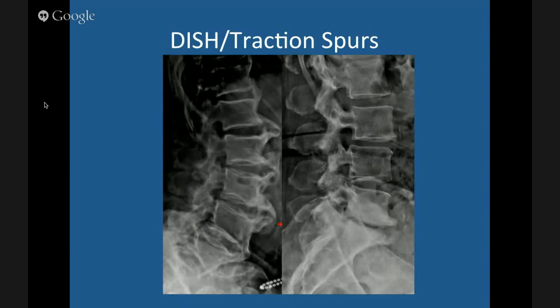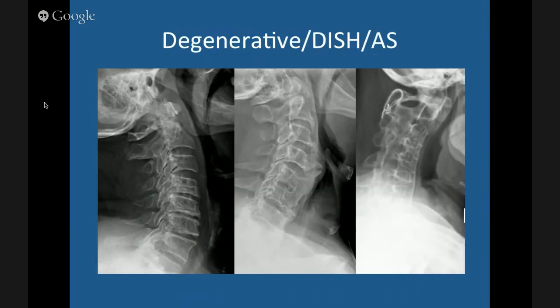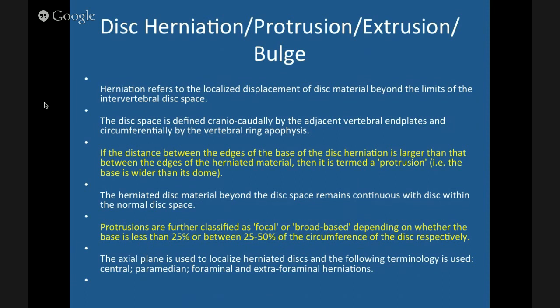In DISH, the bone runs from mid-body to mid-body to mid-body — it's much more bulky and crosses the disc. That looks different from a traction spur: the traction spur is away from the end plate and doesn't cross the disc. DISH starts at the mid-body, crosses the disc, and goes to the next body. Then ankylosing spondylitis looks exactly opposite — thin syndesmophytes coming down the anterior body, with square vertebral bodies from loss of normal anterior concavity. The osteophytes are very thin, not bulky. DISH and ankylosing spondylitis are sometimes confused.